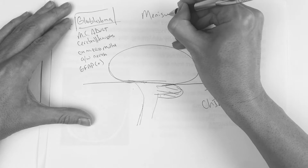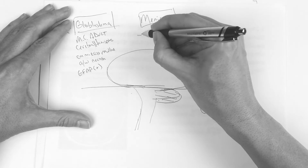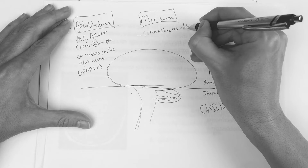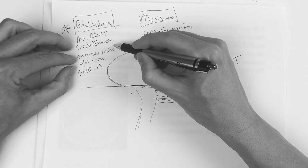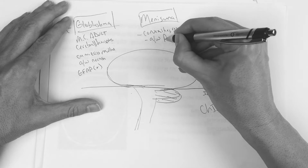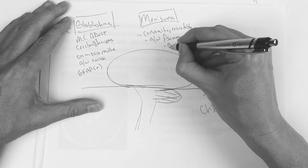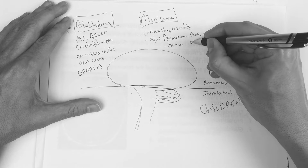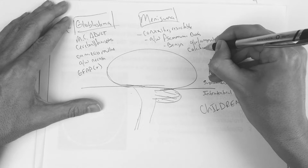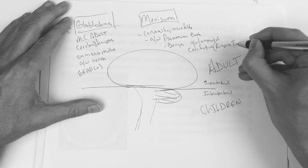The next one is meningioma. You find this one in the convexities. It's resectable — kind of a good prognosis. Glioblastoma, not so good prognosis for the most part. Meningioma is resectable, good prognosis, associated with psammoma bodies, benign, associated with laminated calcifications — like rings on a tree.